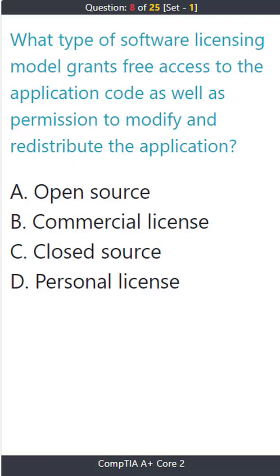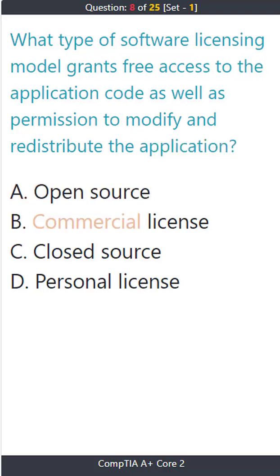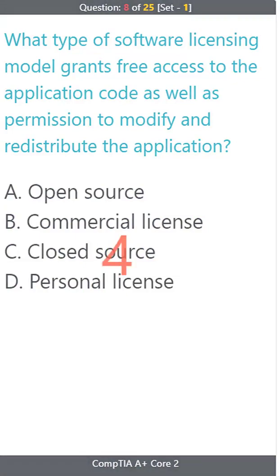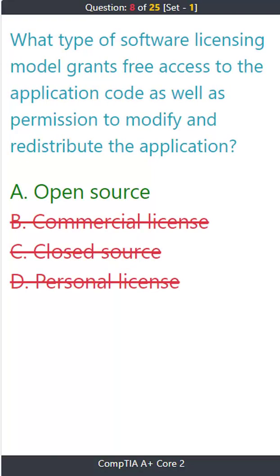Question 8: What type of software licensing model grants free access to the application code as well as permission to modify and redistribute the application? A) Open source. B) Commercial license. C) Closed source. D) Personal license. The correct answer is A: open source.